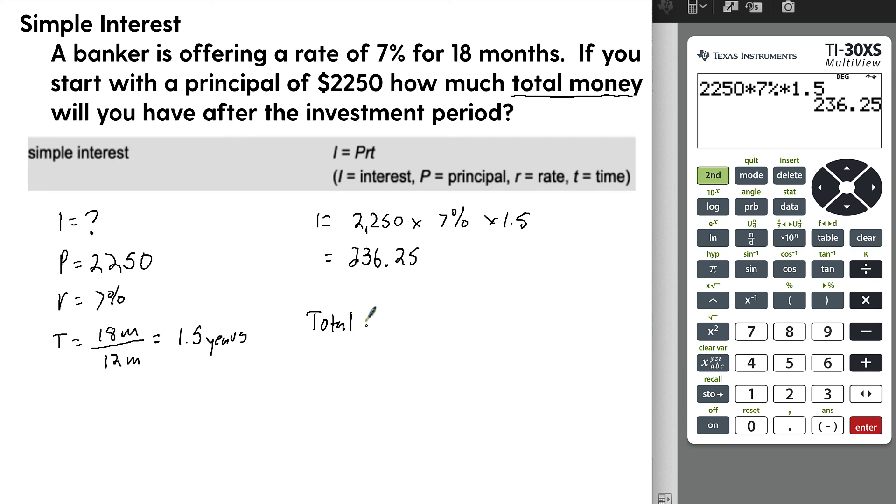But the total is equal to the interest plus the principal. So we've got $236.25 plus $2,250. Let's take this and add it. If you have this, a little shortcut is you can just do add, so it's giving us this previous interest here. So we'll do $2,250. So our total, in this case, is $2,486.25.